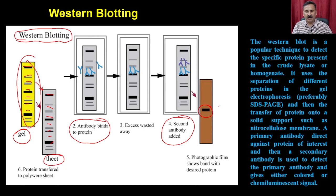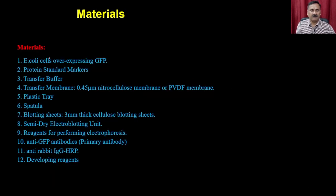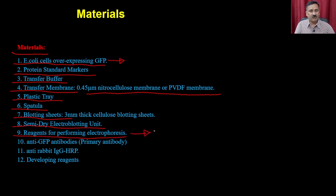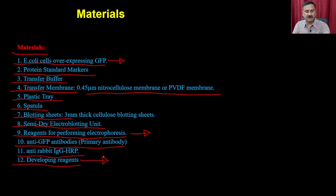There are multiple steps and discrete recipes and protocols you must follow to perform western blotting. In this example using E. coli expressing GFP protein, the materials required include a protein standard marker, transfer buffer, transfer membrane (nitrocellulose or PVDF), plastic tray, spatula, blotting sheets, electro-blotting units, reagents for running SDS-PAGE, the primary antibody (anti-GFP antibody), secondary antibody, and developing reagents.